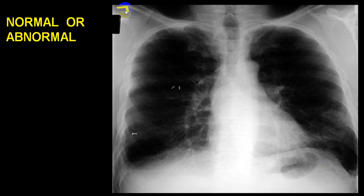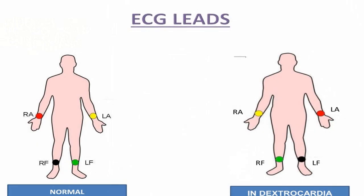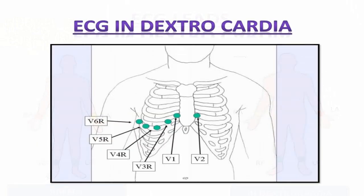Here the X-ray is in a reverse pattern. This is dextrocardia and the stomach bubble is on the right side, so this is dextrocardia with situs inversus — chances of congenital heart disease are three to five percent only, like a normal person.